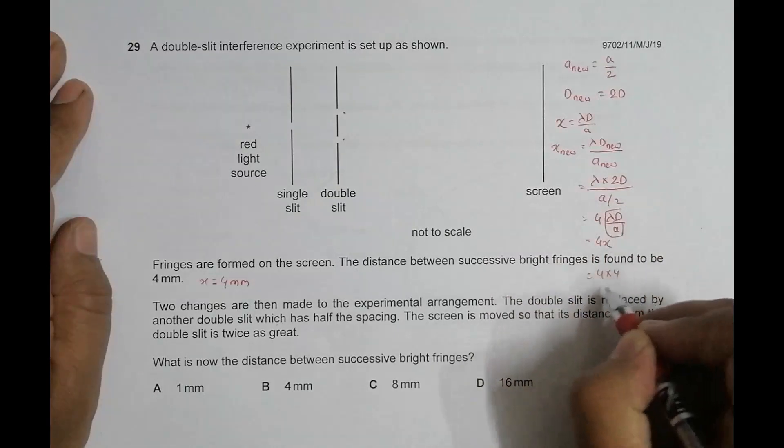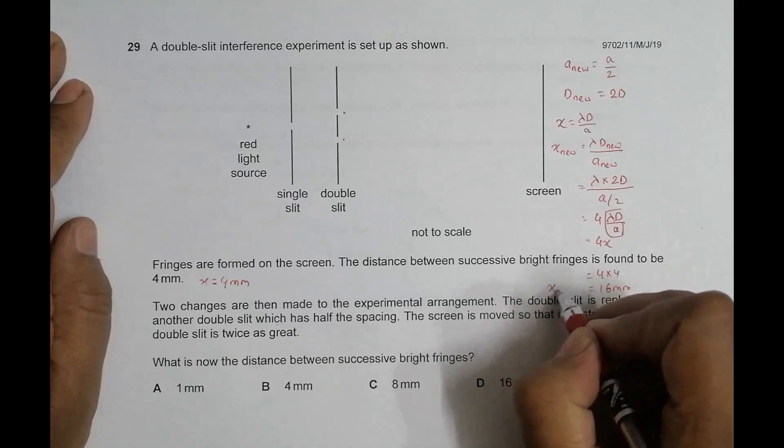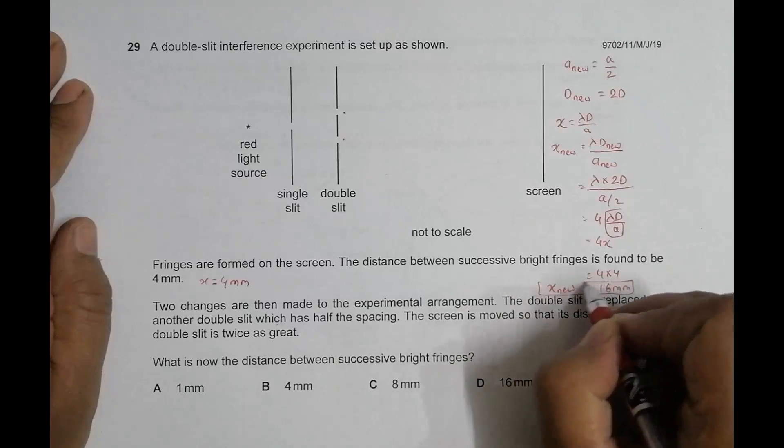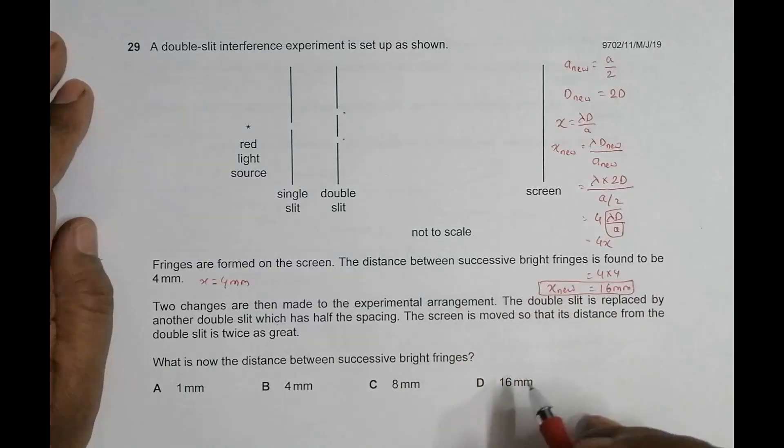Equal to 16 millimeters. So we have the new fringe width x_new is equal to 16 millimeters. Going through the choices, we have D should be the correct choice and all the others disqualify.